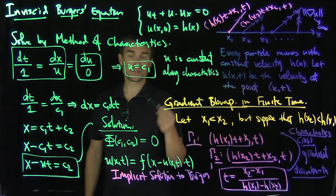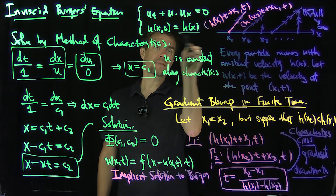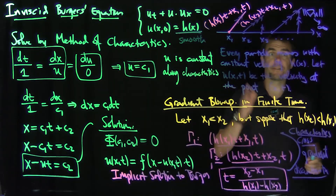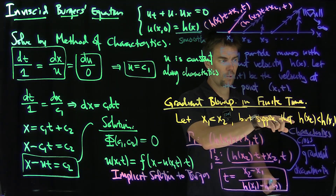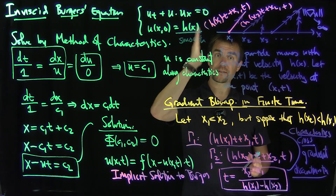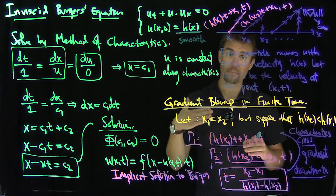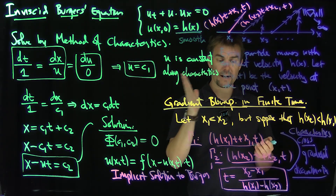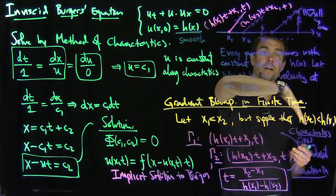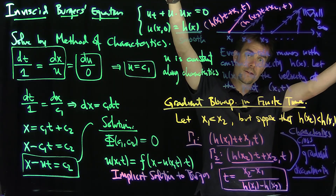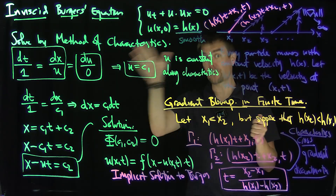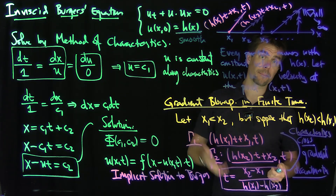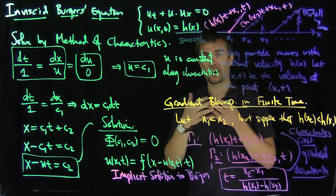The remarkable thing — and this is where there are issues in fluid mechanics — is that h could be a perfectly smooth function. But if at some point the function h decreases, then there's a gradient blow-up for Burgers' equation and the solution is not well-posed for all time. If h is constantly increasing, we don't have any of this danger — the solution just gets flatter and flatter. So if h is increasing we're in great shape; if it's decreasing at any point, you're in trouble. There's a wide class of initial data for which the equation is not well-posed due to blow-up.